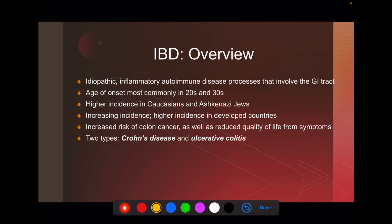As an overview: IBD is inflammatory and idiopathic — we don't really know why it happens, but it's associated with other autoimmune diseases in the patient or family history. It involves the GI tract and has extra-intestinal manifestations as well. It usually shows up in early adulthood, is more common in whites and Ashkenazi Jews, and has an increasing incidence — particularly in developed countries, which lends itself to the cleanliness hypothesis. There is an increased risk for colon cancer, and it significantly reduces quality of life. The two types are Crohn's disease and ulcerative colitis.